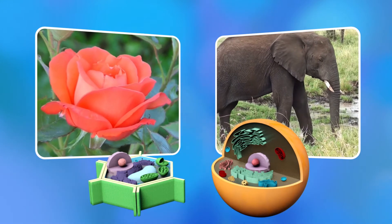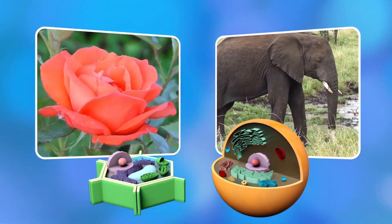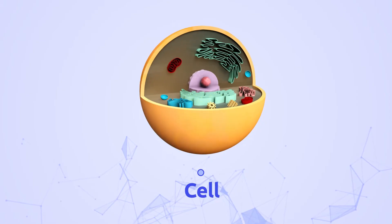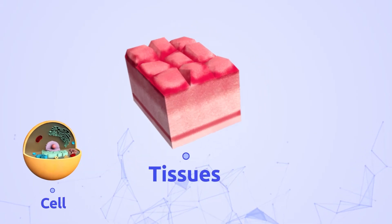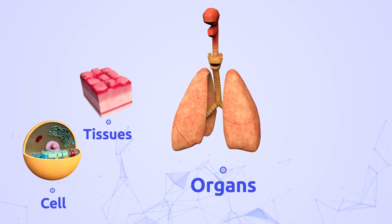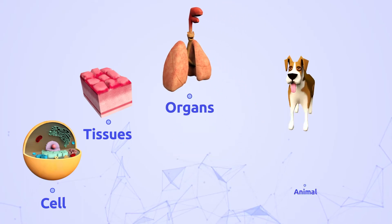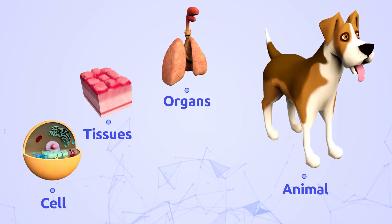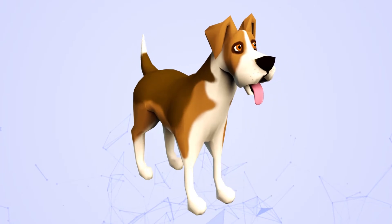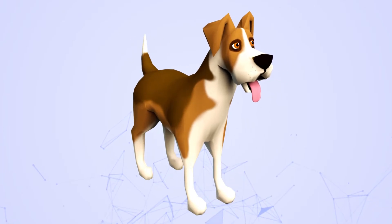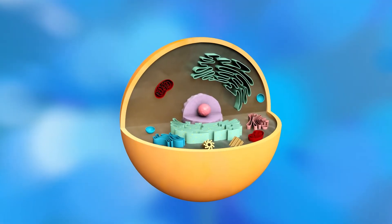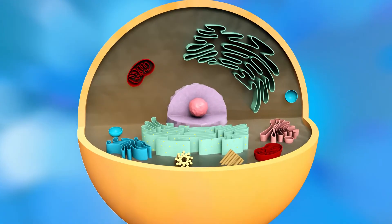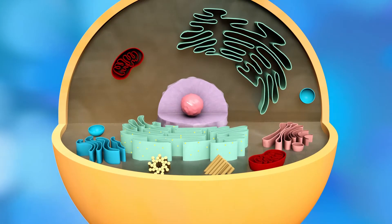Eukaryotic cells can be plant cells or animal cells. Animal cells make up tissues, and these make up animal and human body organs. Each cell has a specific function depending on which organ system it belongs to.